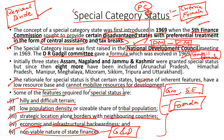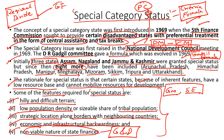Based on this criteria, initially three states were given the special category status: Assam, Nagaland and Jammu and Kashmir. Later, eight more states were given the special category status: Arunachal Pradesh, Himachal Pradesh, Manipur, Meghalaya, Mizoram, Sikkim, Tripura and most recently Uttarakhand. Later the Gadgil formula was revised and updated by the Planning Commission, then headed by Pranab Mukherjee, and this formula came to be known as the Gadgil-Mukherjee formula.